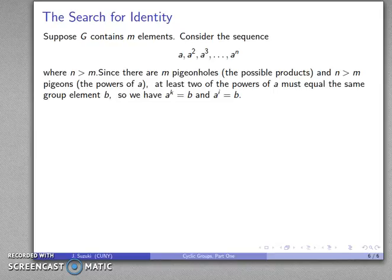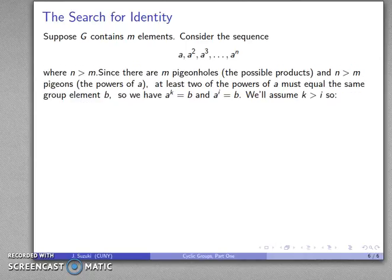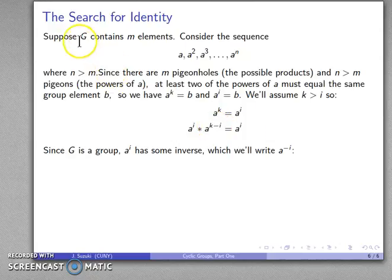And so I have A to the K equal B, and A to the I equal to B. And I'll assume that K is greater than I. You might pause a minute and think about why we're allowed to do this. But if that's true, then I have A to the K equal A to the I. Now, because K is greater than I, I can use my associativity that my group has. I can split off K minus I factors of A, and then have what's left over.